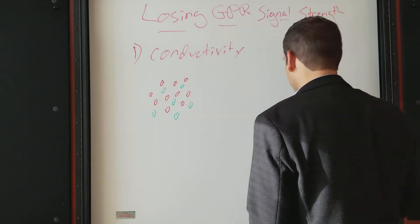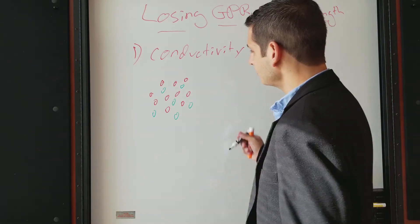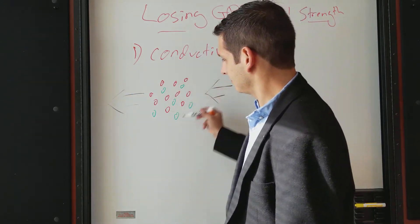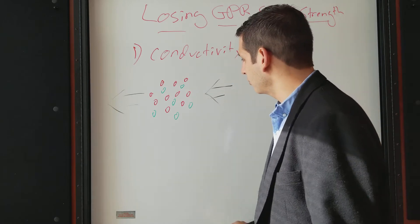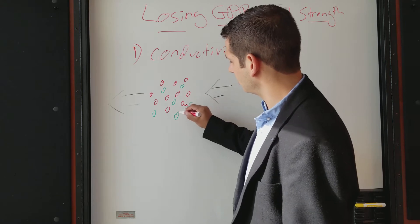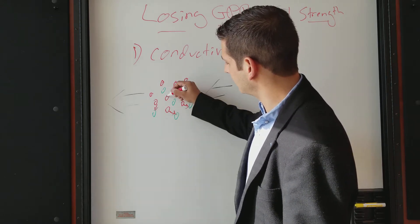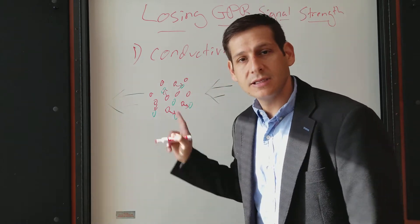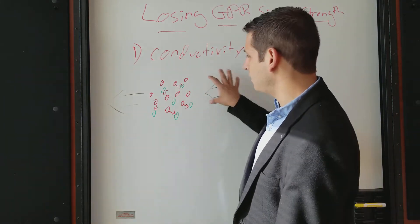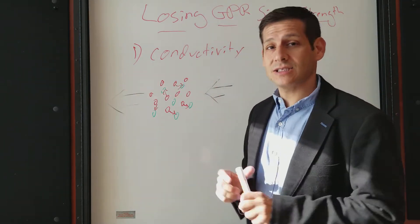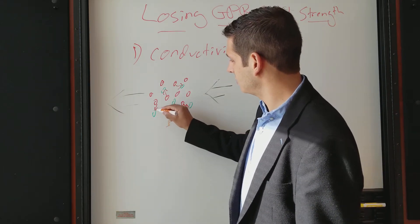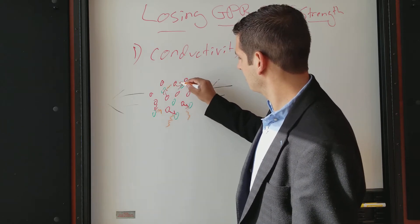What happens is as your wave travels through the soil, it comes out the other side of our example here. It's traveling through the soil, these free electric charges move, they get excited and they move, and they bump into other molecules. Now when they bump into other molecules, it causes friction, and some of your GPR energy then is released due to heat.